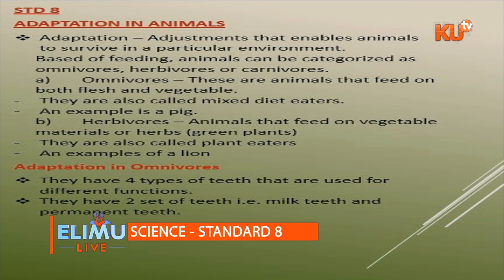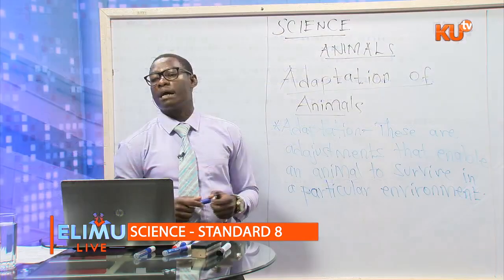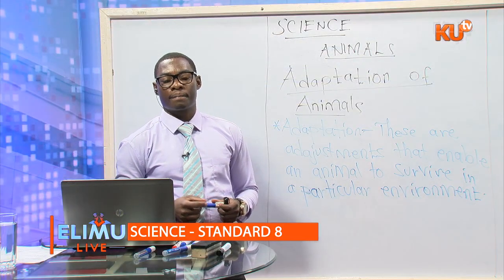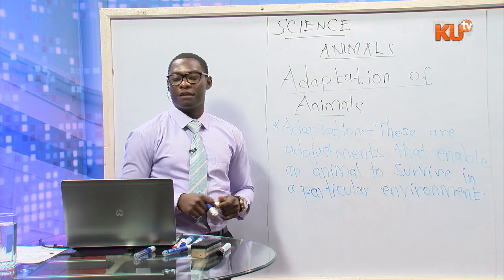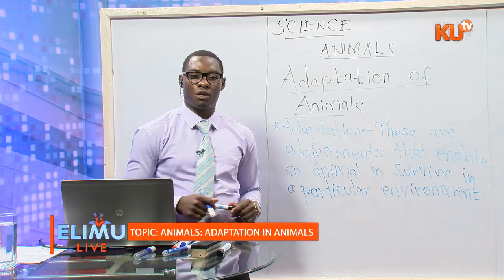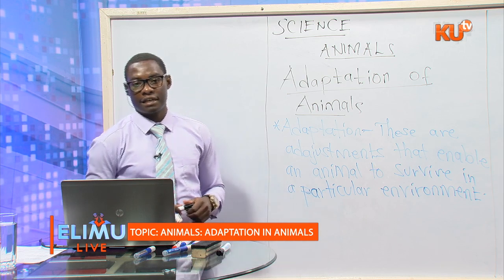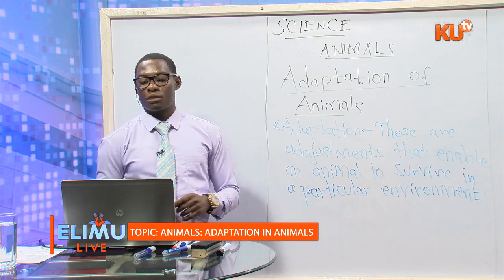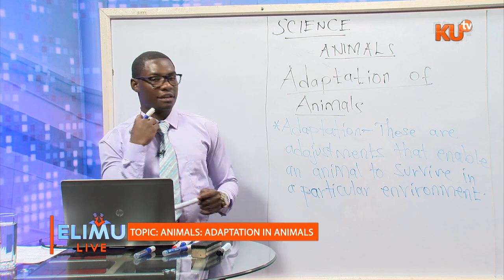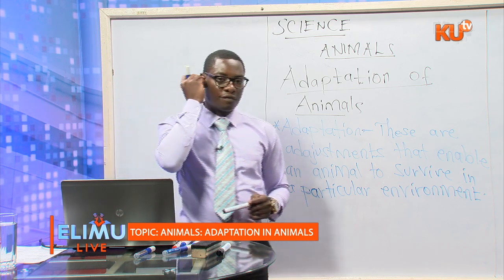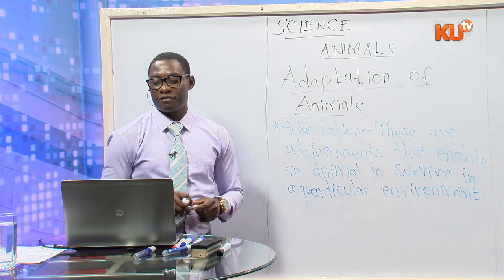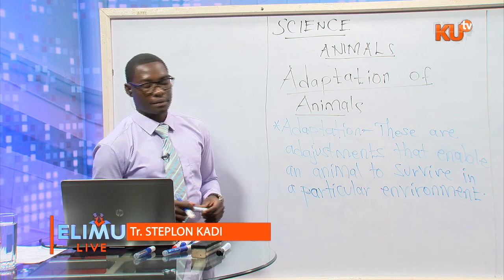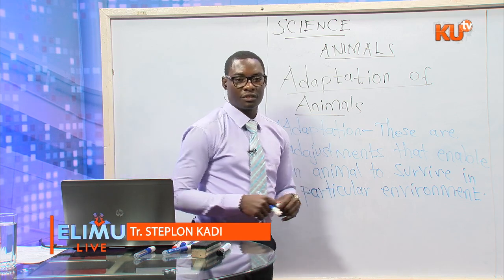Herbivorous animals are animals that feed on vegetable materials or herbs — green plants. An example of a herbivorous animal is a sheep. A sheep feeds entirely on vegetable matter. Carnivorous animals feed mainly on flesh, and an example is a lion. Those are the three categories of animals based on what they feed on.